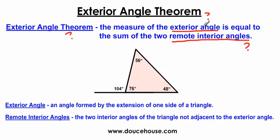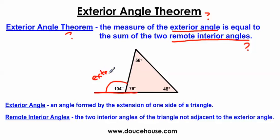What in the world is an exterior angle? It's an angle formed by the extension of one side of a triangle. And so if I extend this side of the triangle here, we get an angle formed on the outside of the triangle, which is called an exterior angle. So this is an exterior angle.